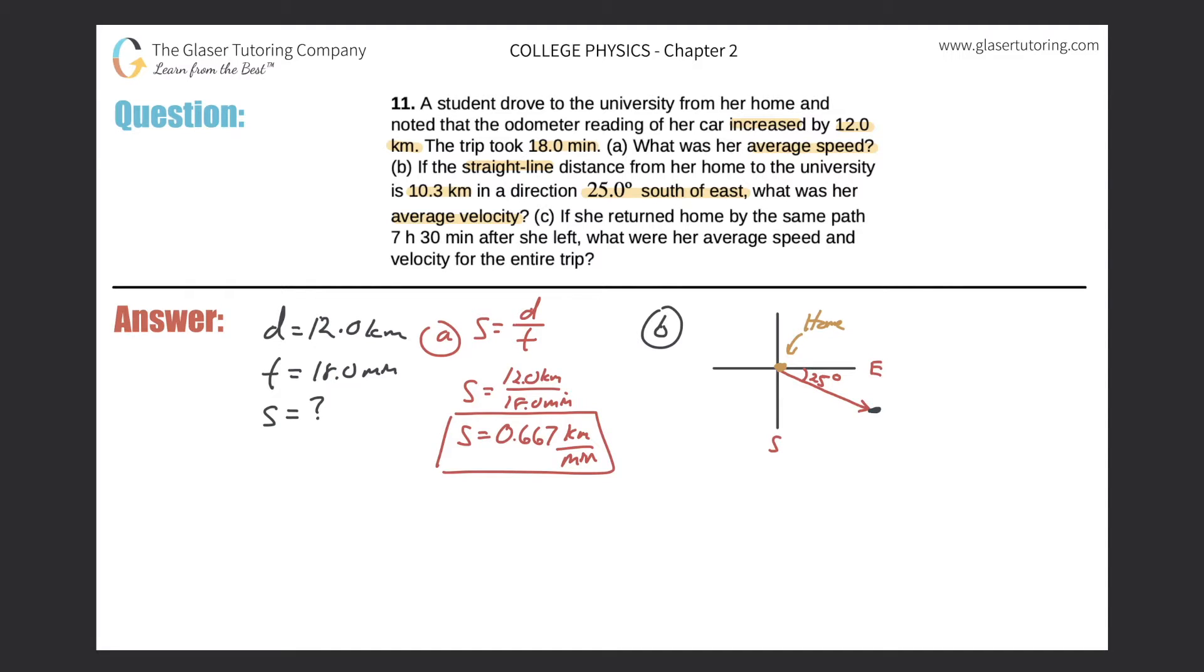And it says that this distance that she traveled, the straight line distance, is 10.3 kilometers. Okay, great. So apparently, though, when she traveled to university, it wasn't a straight line path, because before part A told us that it took 12 kilometers. So let's just assume we can make this hopefully make a little more sense. Maybe she drove something like this. Maybe she drove east and then had to go south. And if she did something like that, then obviously it would be longer than 10.3 kilometers. Just to kind of make sense of what's going on in the problem.